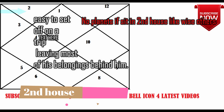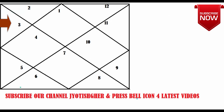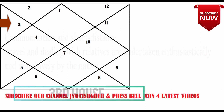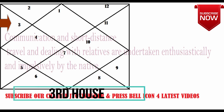This is house number one and this is house number two. If this house is vacant, meaning there are no planets, then such a person whose Kundali this is would find it easy to set off on a trip leaving most of his belongings behind. That is the meaning of an empty second house.